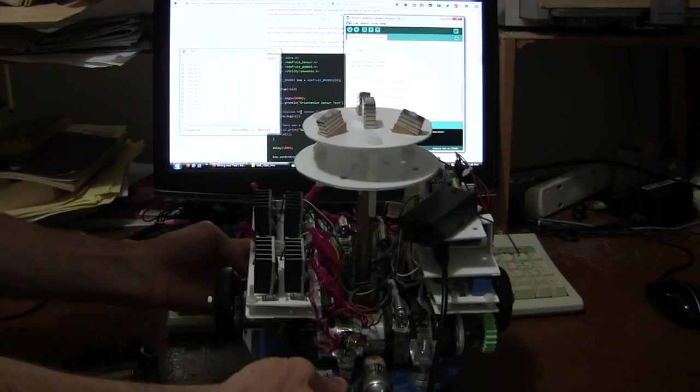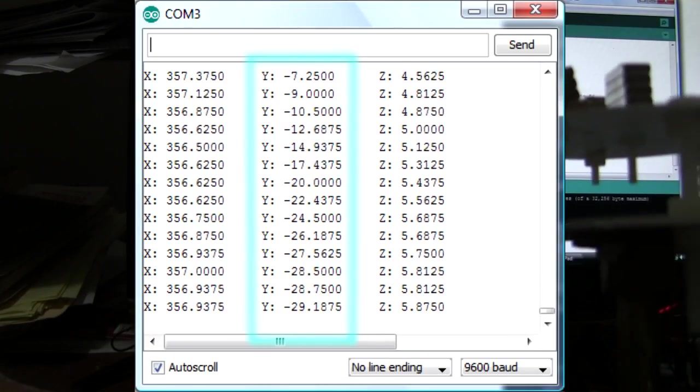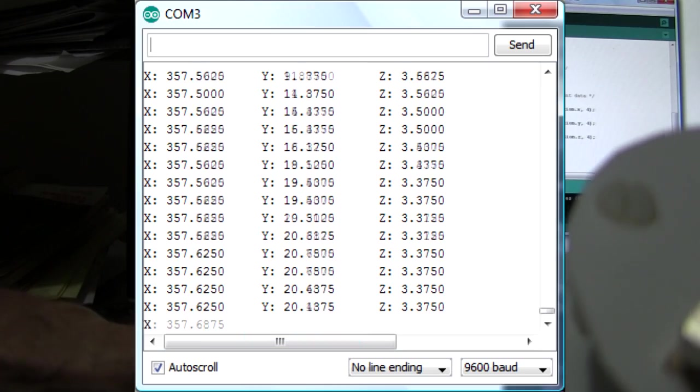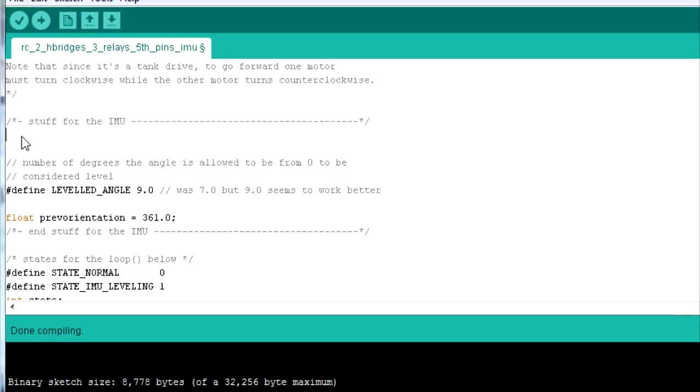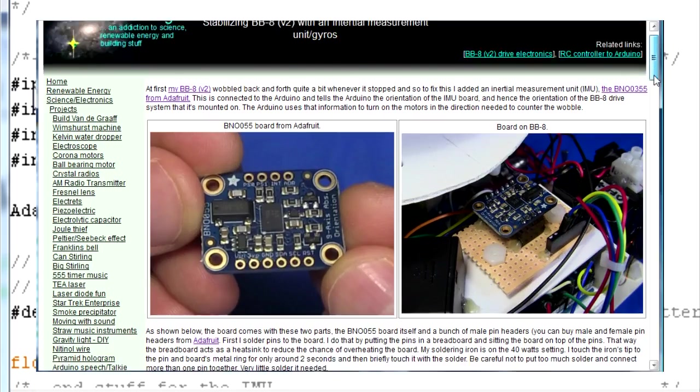I instantly find that tilting the BB-8 in the direction that it drives in modifies the Y-axis. Since that's the value that's shown changing while I tilt it, so now I know it's the Y-axis I need to use. Next, I move parts of that sample code into my Arduino BB-8 program. You can find the resulting code on the BB-8 pages on my website.